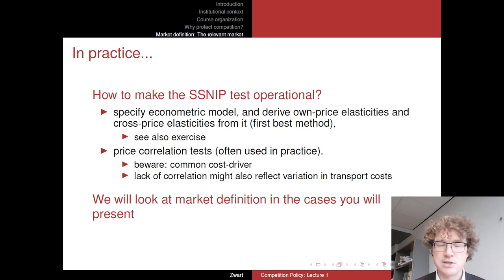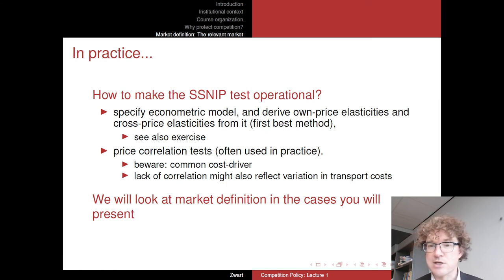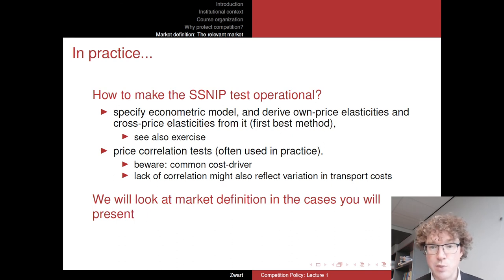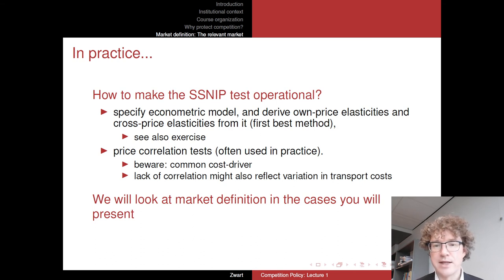Typically, these SSNIP tests and their operationalization tend to be lengthy exercises that are much debated in actual competition cases. There are strong incentives for companies to claim that relevant markets are actually quite large so that they have very small market shares, whereas a competition agency wanting to make its case might be inclined to draw relevant markets very narrowly. We will look at market definition in the cases presented — in particular the first case on Ryanair, which we will see in two weeks.